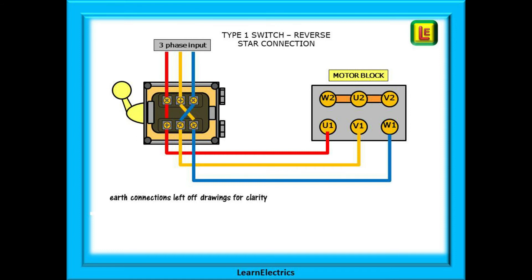Put the motor in reverse and the crossover comes into play. L1 input goes to U1 as before, but L2 is now crossed over and goes to W1, whilst L3 goes to V1 on the motor block.